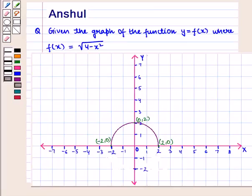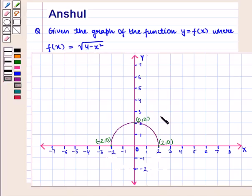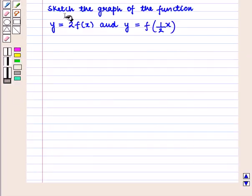Hello and welcome to the session. In this session we are going to discuss the following question: given the graph of the function y = f(x), where f(x) = √(4 - x²), and this is the graph of the function f(x) = √(4 - x²), sketch the graph of the function given by y = 2·f(x) and y = f(1/2 · x).